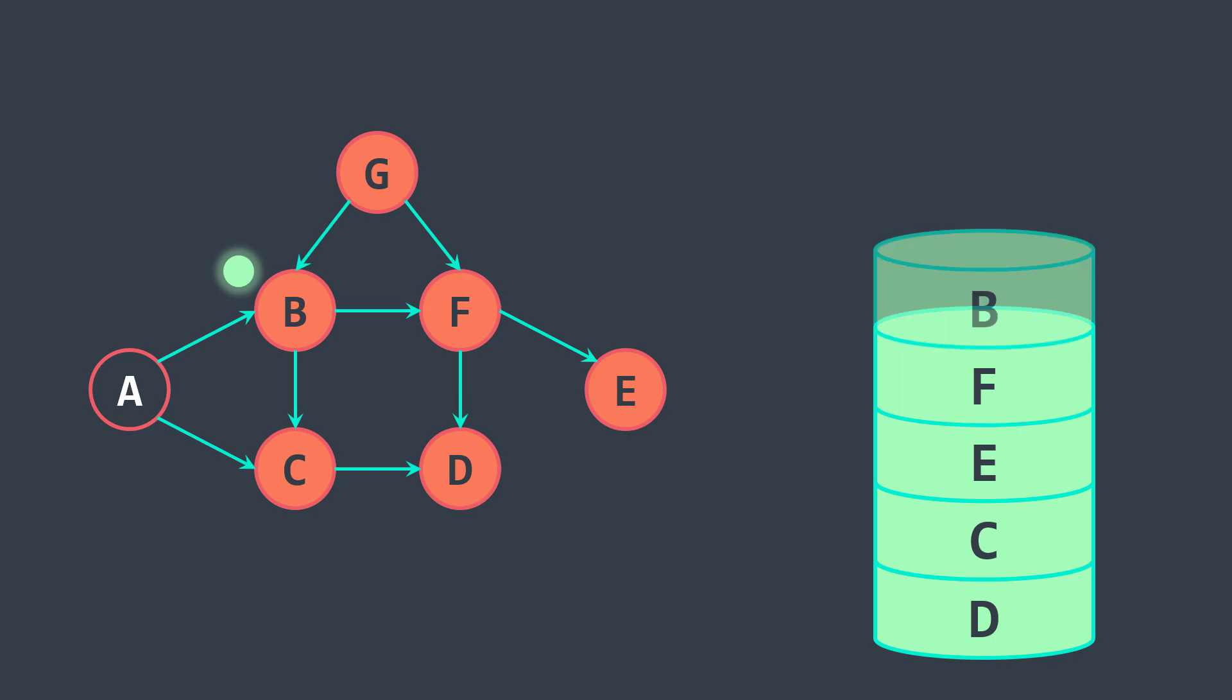Same thing for B, we push and we backtrack. Back to G, F is already visited, so we finished and we push.